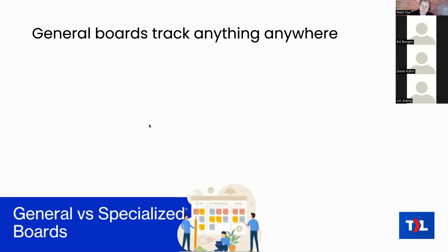Now let's talk about general versus specialized boards. A general board is what I've shown you throughout this course — typical columns like new, ready, waiting, in progress, and complete. Those stages can work for just about any workflow at any MSP; they're very generic. That's not the only way to track work though. There are also specialized boards, which track work for one specific workflow.